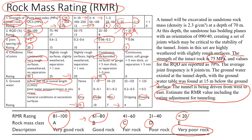This is UCS — unconfined compressive strength — not point load, because point load cannot be that high. We find 75 MPa in the table, so our first number for the rating will be 7. Now checking RQD: it's given as 70%, which gives a rating of 13.